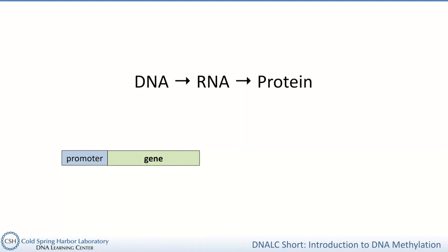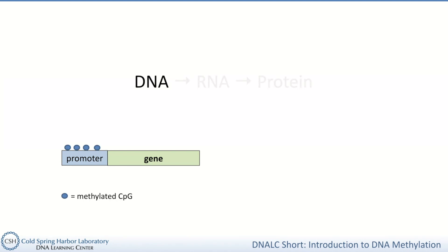Promoters often contain lots of CpGs. In fact, in humans, about 70% of proximal promoters — promoters that are right next to the start of a gene — contain what are called CpG islands. CpG islands are stretches of DNA that have more CpGs than are expected. DNA methylation that occurs in promoters usually stops that gene from being expressed. This is at least partly because the methylation physically blocks the proteins required for transcription from getting to the promoter and the gene.